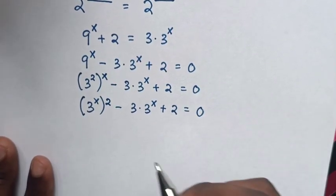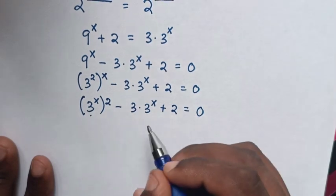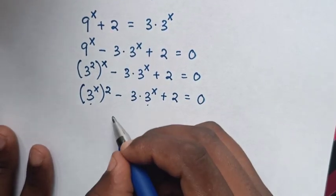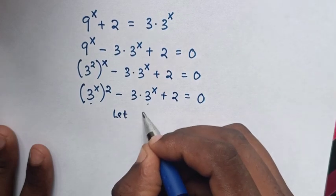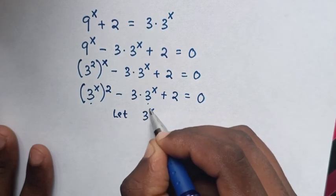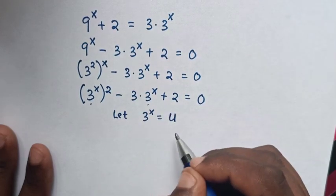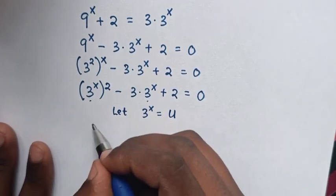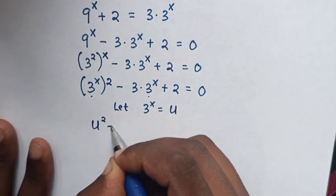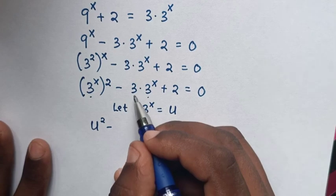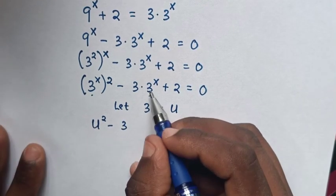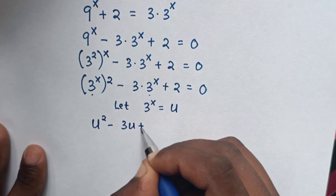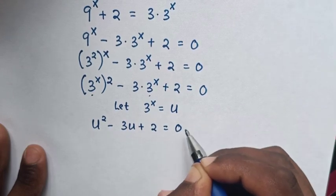Then because 3^x is common, we will let u equal to 3^x. So let 3^x equal to u. Then we substitute u into 3^x, so it will be u squared minus 3u plus 2 is equal to 0.